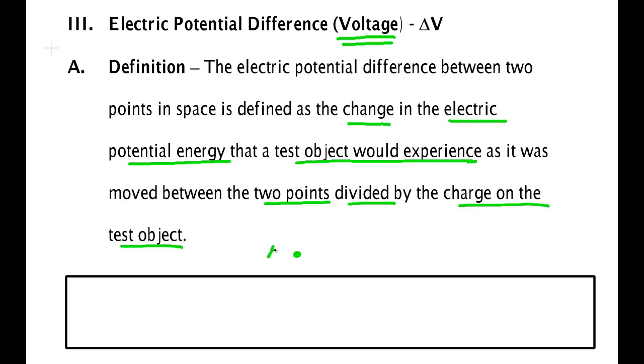So we have point A and point B, and we have some charge Q, and we move that charge by some path, and it does not matter which path we take because the electric force is a conservative force. Over that path we measure a change in electrical potential energy.